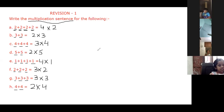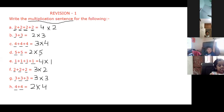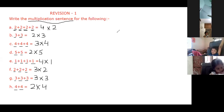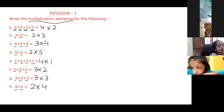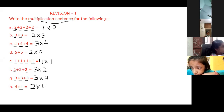Siddharth, read answer number four — bit D. Two multiplied by five. Very good. And the next one, bit E? Four multiplied by one. Very good — two multiplied by five and four multiplied by one.